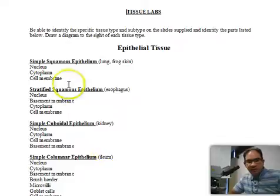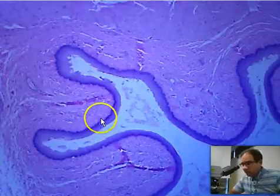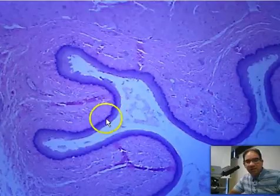Our next tissue is stratified squamous and we're going to look at a slide of an esophagus. This is what it looks like at about 40x and we want to zoom in on this epithelium right here, this lining.